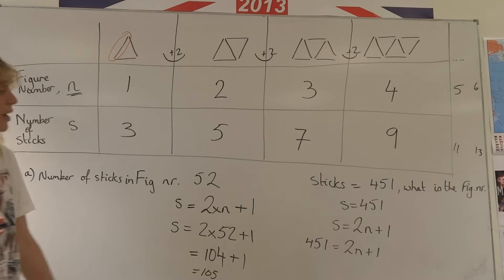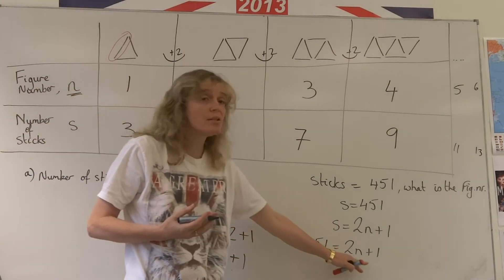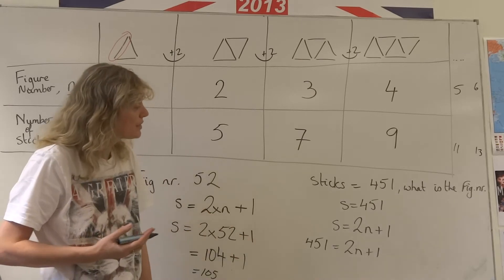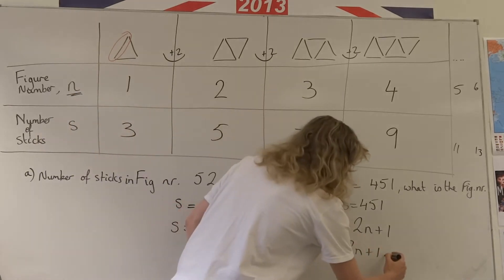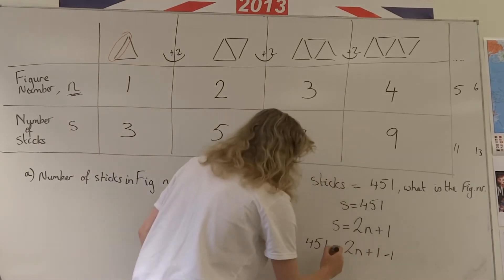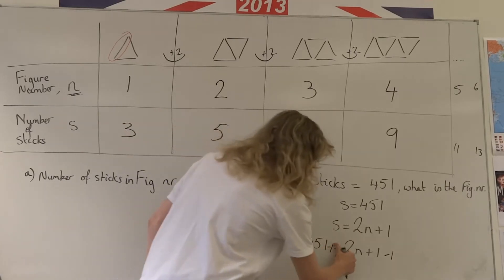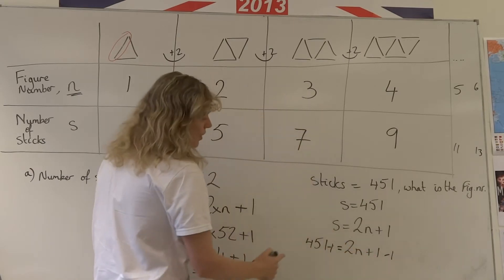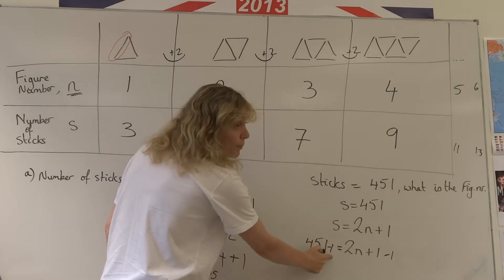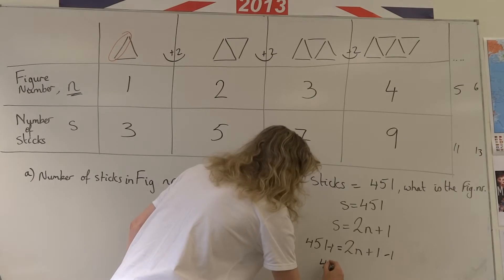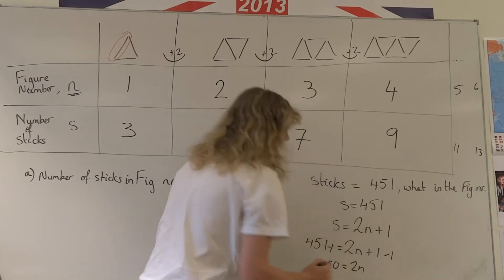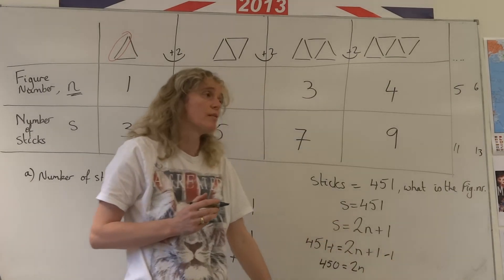When it comes to algebra we always want our n's on one side and all the numbers on the other. So the easiest thing to do here would be to subtract one from both sides of our equation. If I take away one from both sides of our equation I get 451 minus one here giving me 450 equals two lots of n. And here I've got a plus one and a minus one giving me zero there.